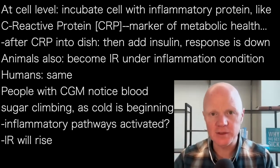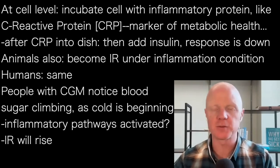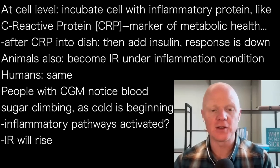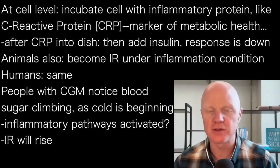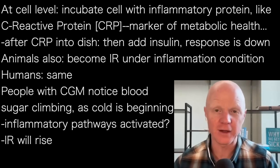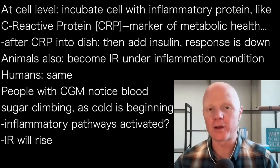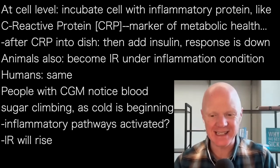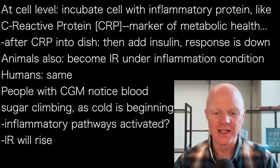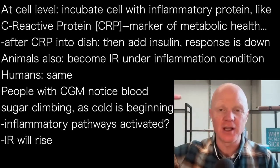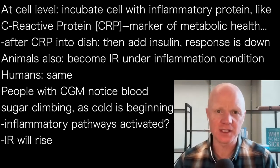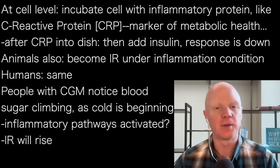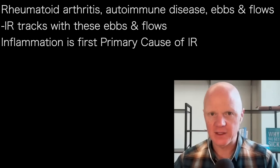The same thing goes for animals — if you induce an inflammatory response in animals, they become demonstrably insulin resistant. And the same thing happens in humans. It has been fascinating to notice, during this period over the last few years where everyone is much more mindful of their immune health, that people wearing continuous glucose monitors can almost predict that they have a cold or flu coming on because they notice their blood glucose levels start to climb and get more variable — a general sign of insulin resistance. And indeed, that is the case: in humans, if you induce an immune response, the body will become more insulin resistant if you activate those inflammatory pathways.